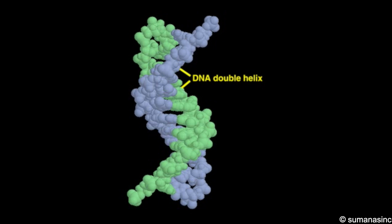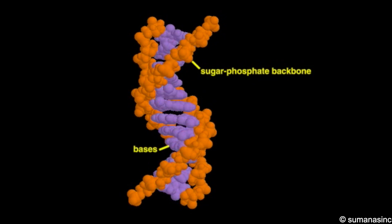Two DNA strands intertwine to form a double helix. Each strand has a backbone composed of phosphates and sugars to which the bases are attached.